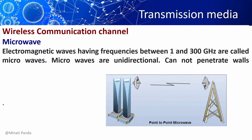Microwaves are unidirectional, as the sending and receiving antennas must be aligned. The waves sent by the sending antenna are narrowly focused. Microwave signals are normally limited to the line of sight, so long-distance transmission using these signals requires a series of repeaters forming a microwave relay. It cannot penetrate through walls.